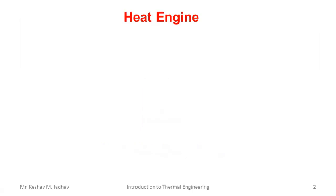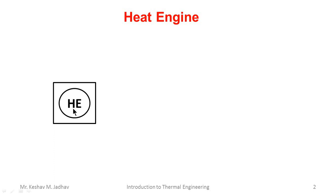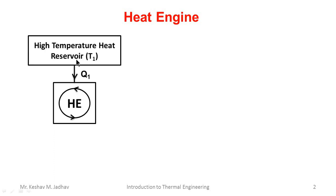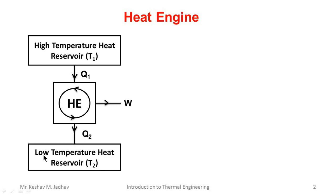First we will see what is a heat engine. A heat engine is a device which works in a cyclic process. It absorbs heat from a high temperature heat reservoir called the source, converts part of that heat into work, and the remaining heat is rejected to a low temperature heat reservoir called the sink. Here the source temperature T1 is always greater than sink temperature T2.